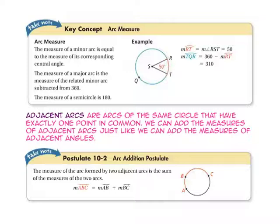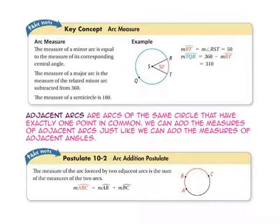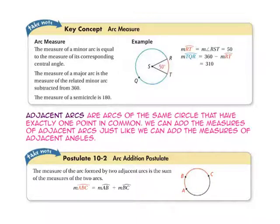The measure of a minor arc is equal to the measure of its corresponding central angle. Since angle RST is 50 degrees, the measure of arc RT is also 50 degrees. The measure of a major arc is related to the minor arc and the entire circle, 360 degrees. So the measure of major arc RQT is 360 degrees minus 50, or 310 degrees. The measure of a semicircle is always 180 degrees. Adjacent arcs are arcs of the same circle that have exactly one point in common. We can add the measures of adjacent arcs just like we add the measures of adjacent angles.